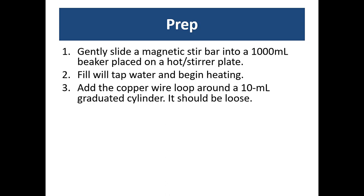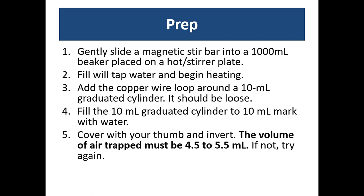Meanwhile, you're going to add a copper wire loop, kind of tie it loosely around a 10 milliliter graduate cylinder. It has to be loose because you have to be able to slide the graduate cylinder through that loop. You're going to fill the 10 milliliter graduate cylinder to about the 10 milliliter mark. Cover with your thumb and invert it so that you will have a trapped air bubble of about 4.5 to 5.5 milliliters. If you don't get that size of a bubble, try it again.